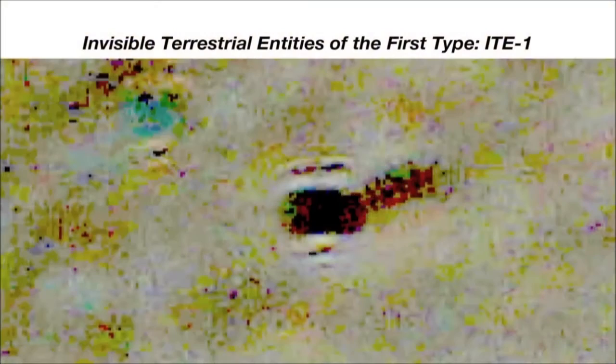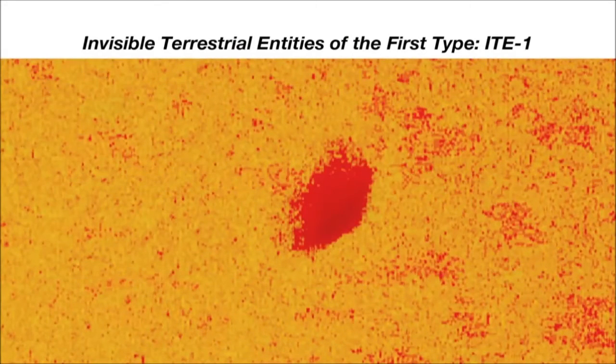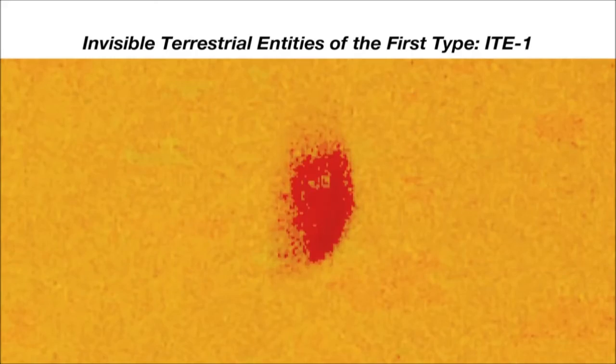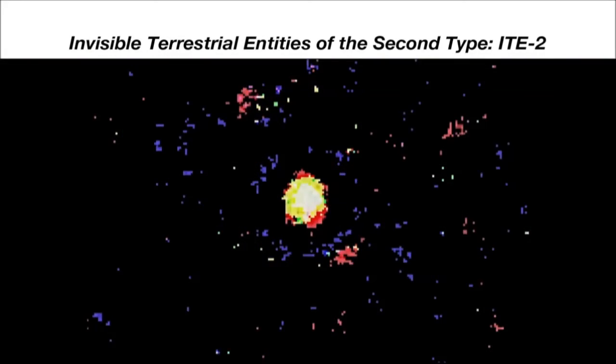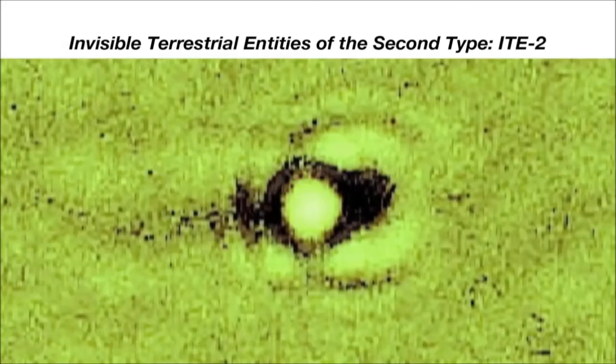We have detected at least two types of ITE. The first type, also called dark ITE, essentially consists of entities leaving a dark image in the background of digital cameras attached to our new telescope. A second type, called bright ITE, essentially consists of entities leaving a bright image in the background of digital cameras attached to our telescope, often visible without any enlargement.